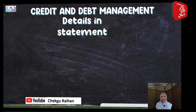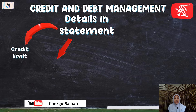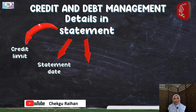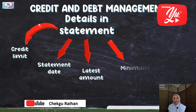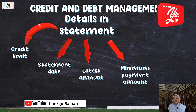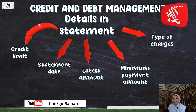In a statement, we have detailed: first, credit limit; second, statement date; third, latest amount; fourth, minimum payment amount; and the last one, type of charge.